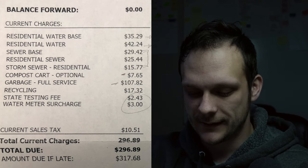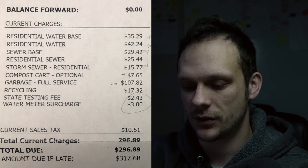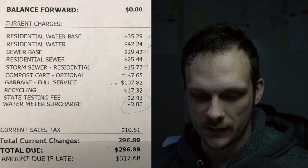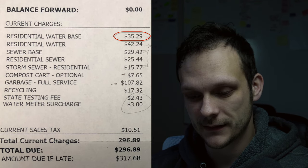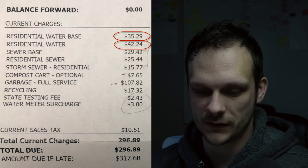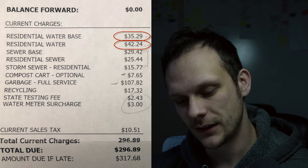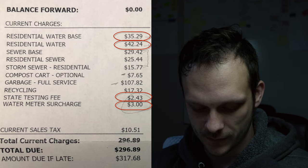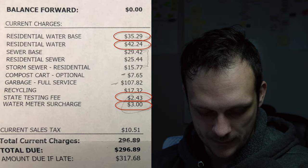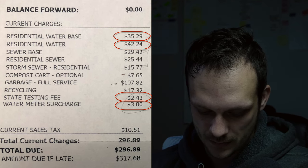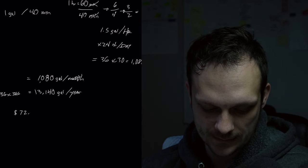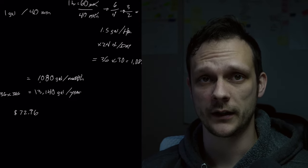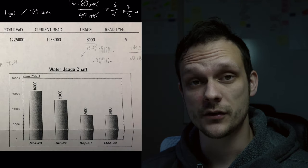We have our leaks, and we're going to take these numbers and add them together to figure out how much water costs us. We add up all of the water-related fees, which they have what they call a residential water base charge, then the residential water, which I'm going to assume that is usage. And then they also have a state testing fee and a water meter surcharge. So that's what they charge us for having the meter.